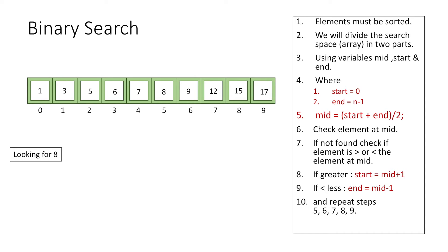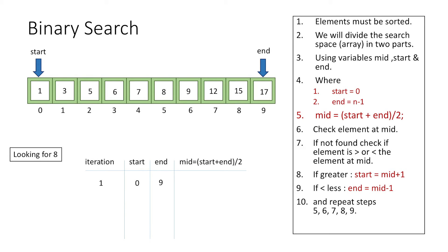Let's implement this step by step. We initialize start to 0, which is the index of the first element, and end to n-1, which in our case is 10-1 = 9. Using the formula (0 + 9) / 2 = 4 (taking only the integer part), mid is set to index 4. This divides our array into two sub-arrays: index 0 to 4 and index 5 to 9.